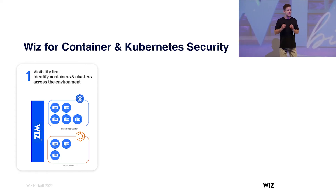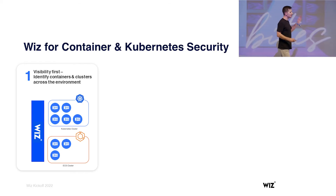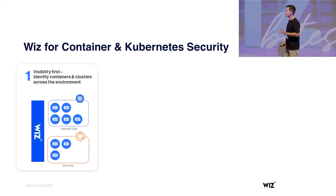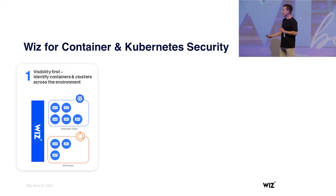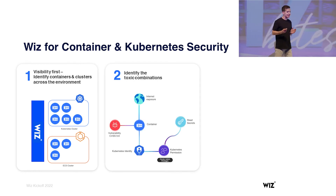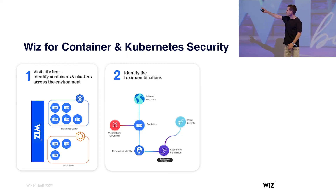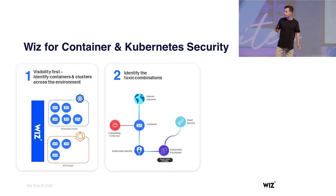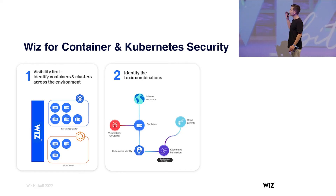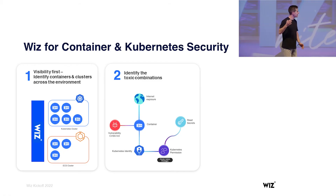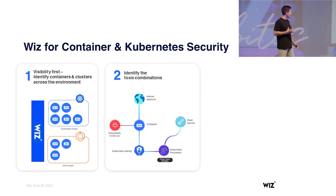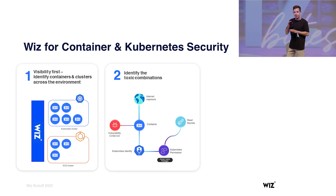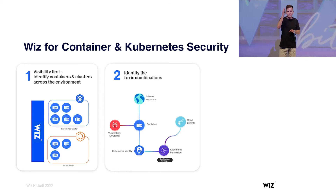Wiz does this fundamentally differently. Wiz is first and foremost a container security solution built for security teams, not only DevOps or developers. It puts visibility first — agentless visibility into all running containers and clusters in my cloud-connected environment, so I start by understanding the full scope. Then, just like on the cloud, we identify and analyze the different risk factors: vulnerabilities on running containers, effective permissions, effective exposure, and misconfigurations in the cluster — all cross-correlated to surface the most critical risks.